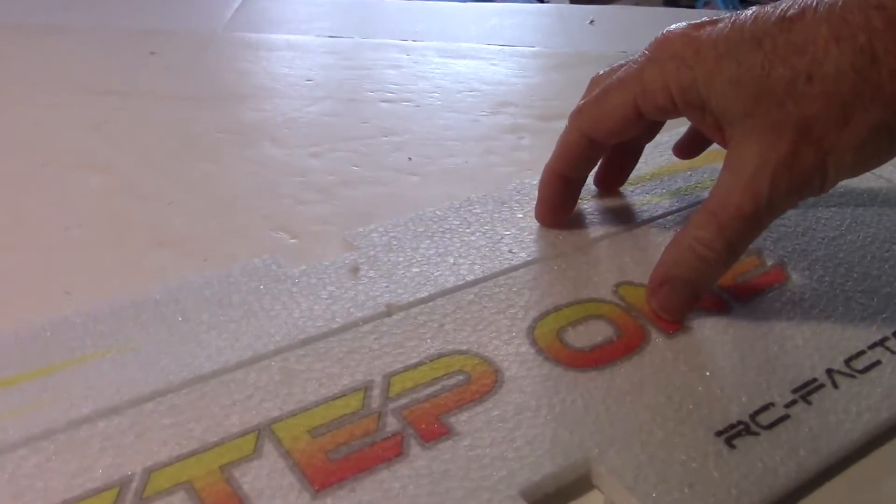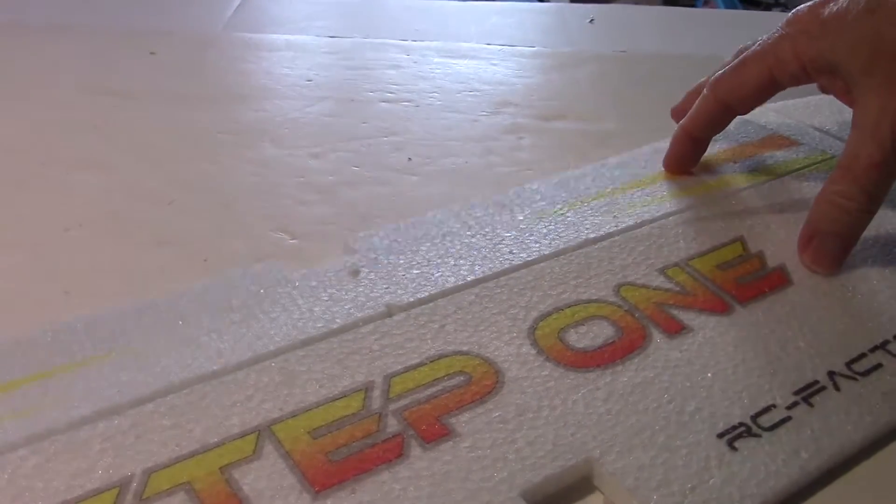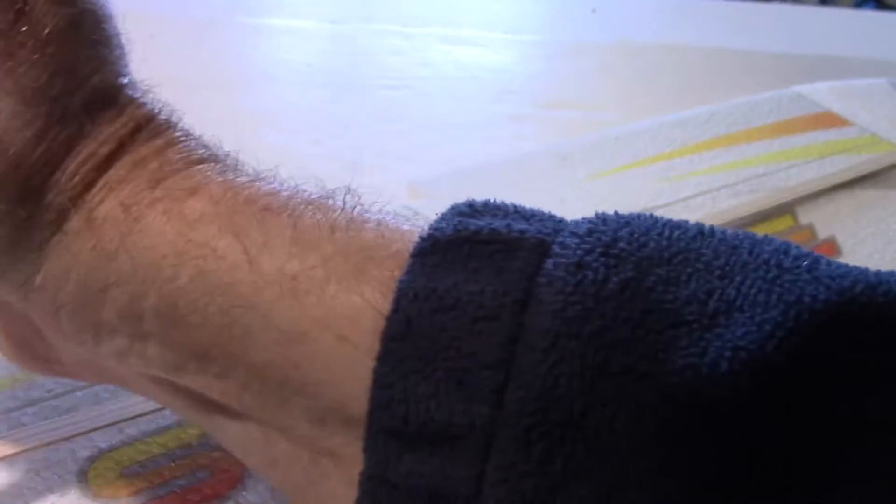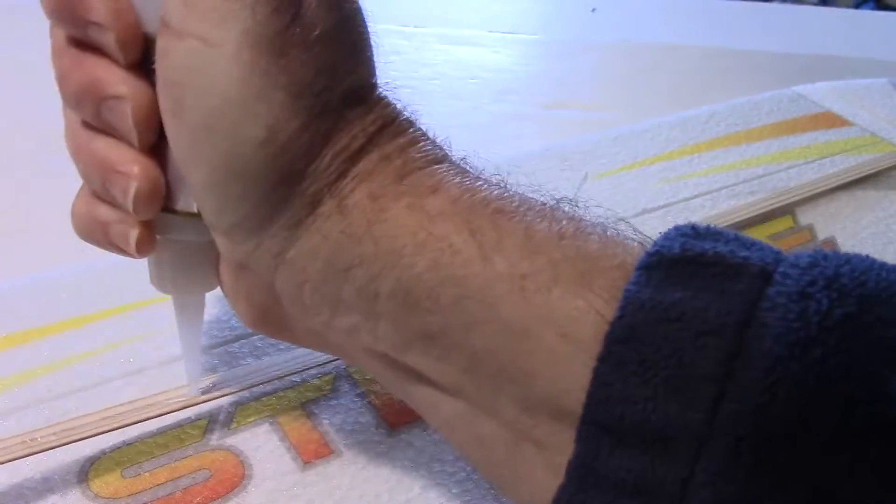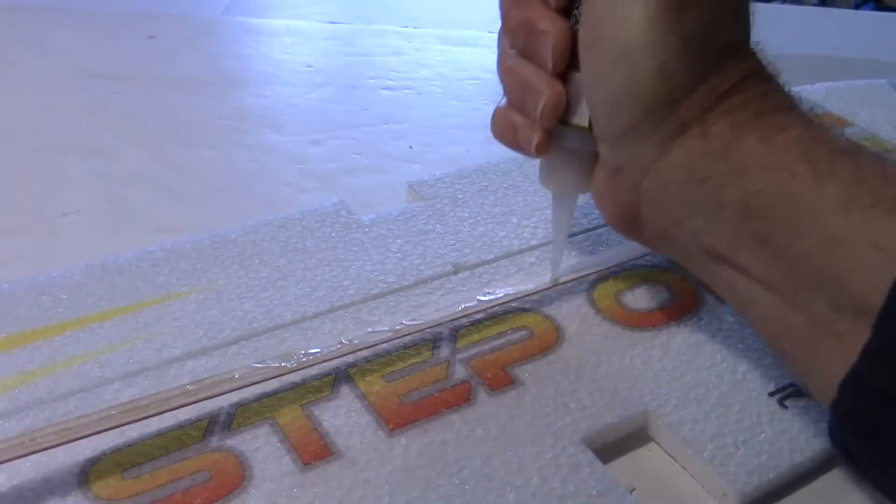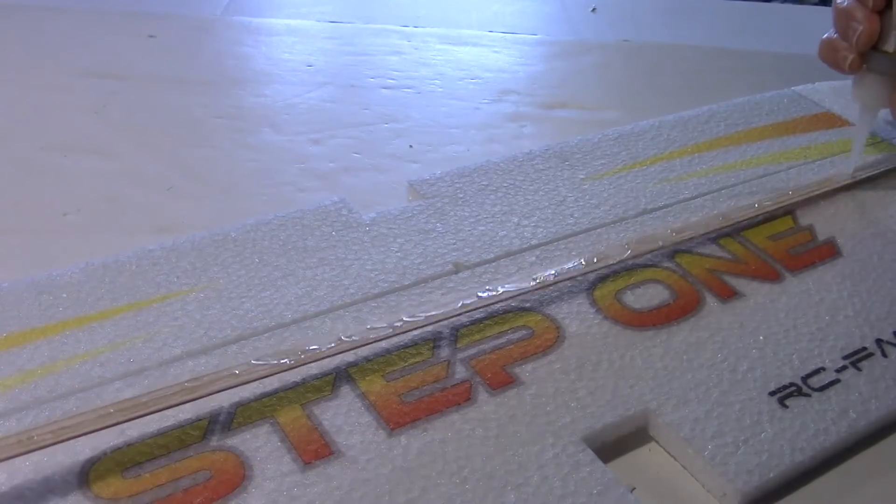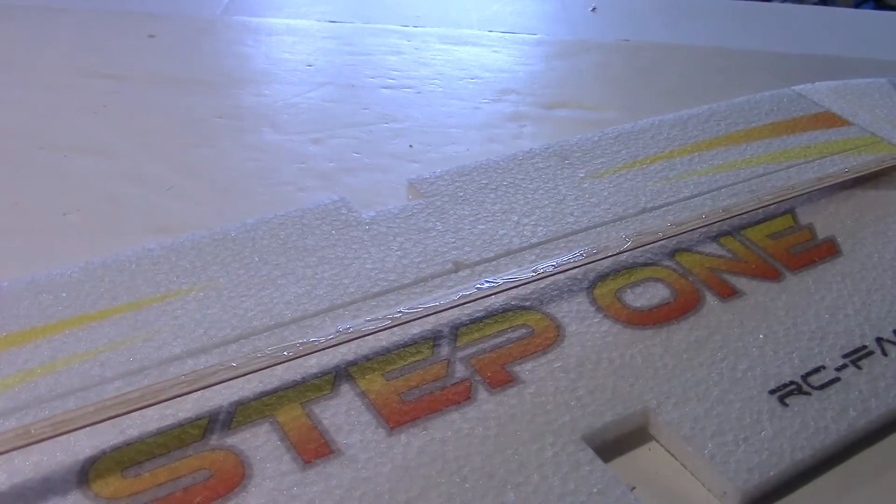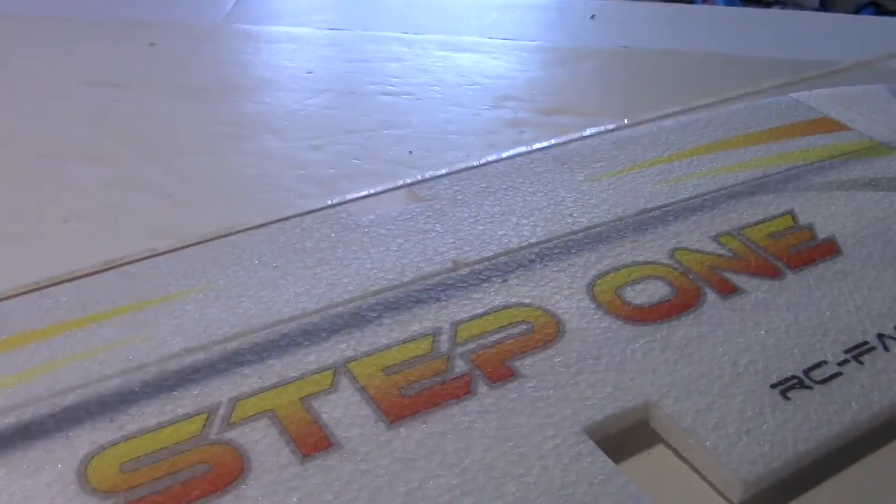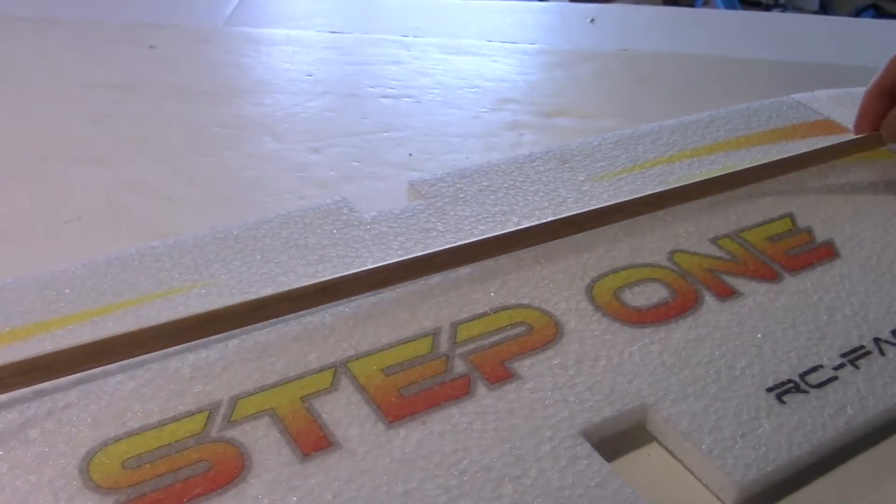That way it can bend a little bit like this when we put the wing spar in to get that airfoil. Now apply some medium CA to both sides of the wedge spar. Insert the wedge spar into the slot in the wing.